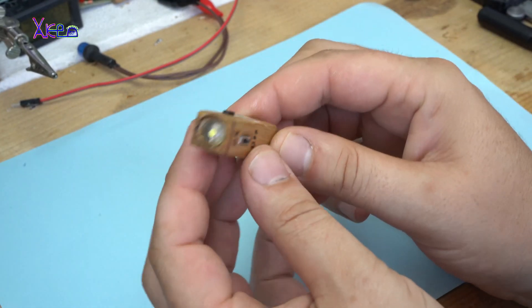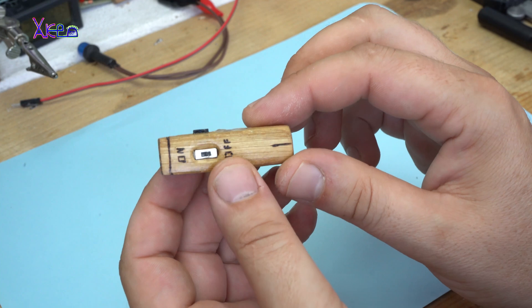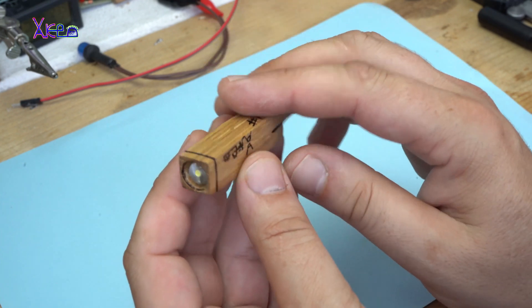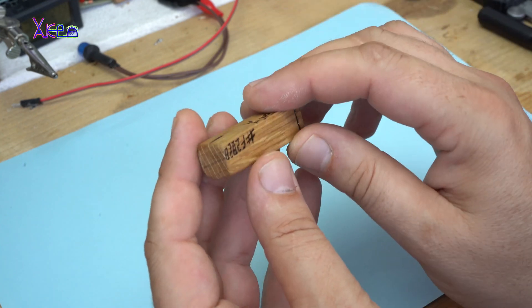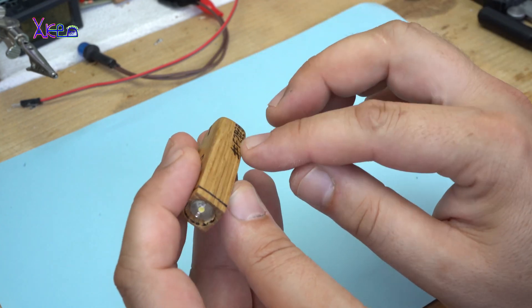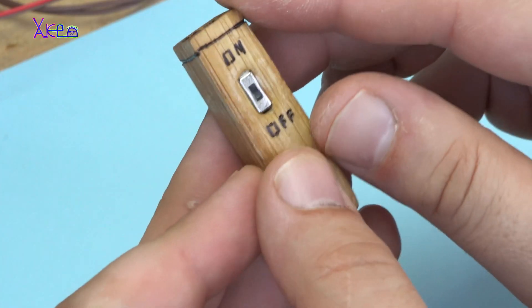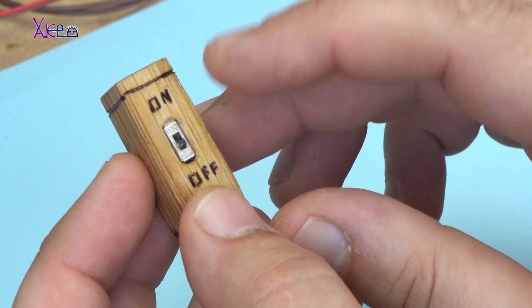The mini rechargeable flashlight made of wood. It's finished. And I made some marks, like this one, my signature. This is for the switch on off.